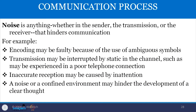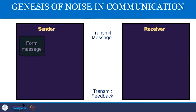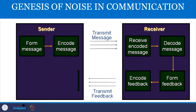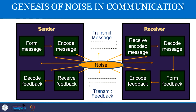Noise in the communication process is anything — in the sender, transmission, or receiver — that hinders communication. For example, encoding may be faulty due to ambiguous symbols, transmission may be interrupted by static in the channel such as a poor telephone connection, and inaccurate reception may be caused by inattention. A confined environment may also hinder the development of clear thought. The genesis of noise can be sender-specific noise, channel-specific noise, or receiver-specific noise.